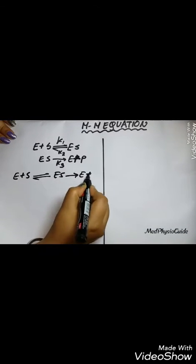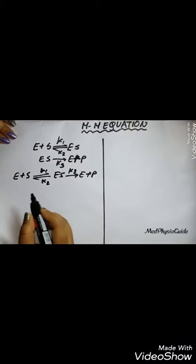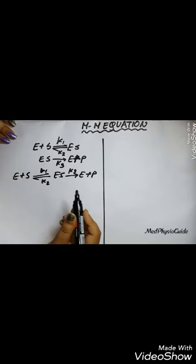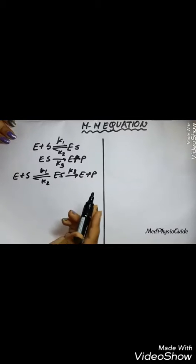If we merge both equations, we would get E plus S gives ES and ES gives E plus P, where K1, K2, and K3 are rate constants.